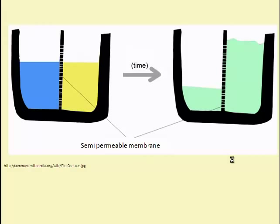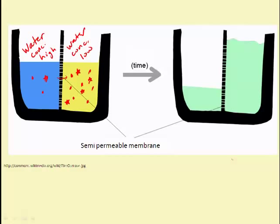Let's take a look at some features of osmosis. If you have two solutions, and one solution has a higher solute concentration than the other — regardless of what kind of solutes they are, we're talking about total solute concentration — if one side has a higher concentration of these materials than the other side, and we start with equal volumes, and we assume these materials are dissolved in water, the water will actually move through the membrane from where the water is in high concentration to where the water concentration is low.